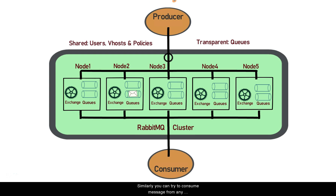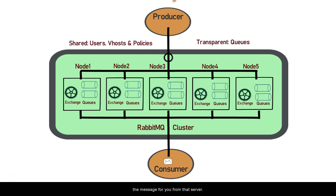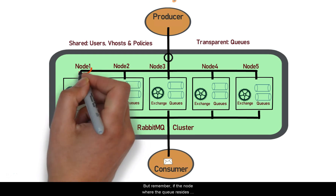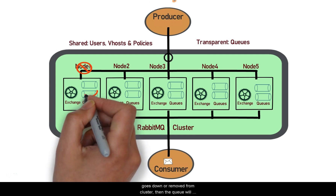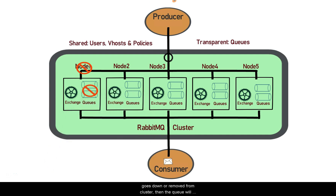Similarly, you can try to consume a message from any server in a cluster. Internally RabbitMQ will look into the server where the queue actually resides and it will fetch the message for you from that server. But remember, if the node where the queue resides goes down or is removed from the cluster, then the queue will not be accessible.